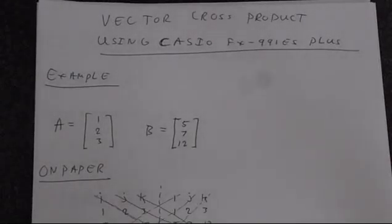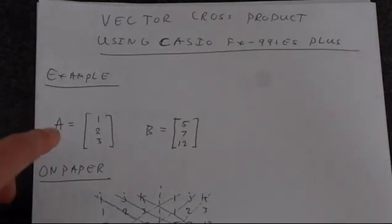In this video, I'm going to show you how you can find the vector cross product using a Casio FX991ES Plus calculator. And the best way to show you how to do this is just do an example. We'll start by looking how you would do this on paper.